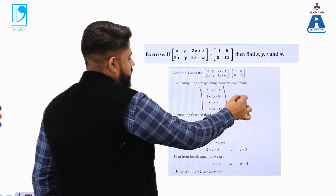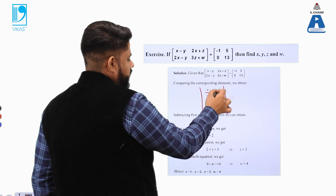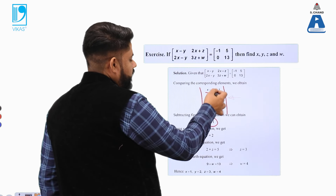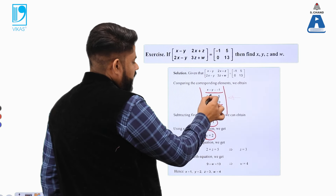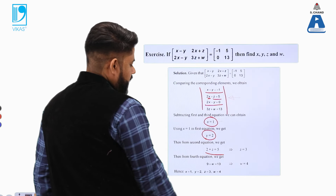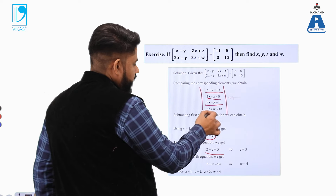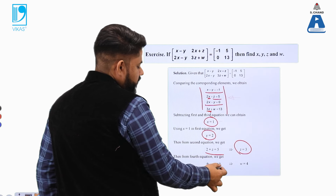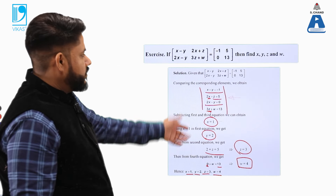Using the general equation-solving procedure: take the first and third equations (x − y = −1 and 2x − y = 0) and subtract to get the value of x. Once x is found, substitute into any equation to get y. Using x = 1 in equation 2x + z = 5: 2×1 + z = 5, so z = 3. Then substitute z = 3 into 3z + w = 13: 9 + w = 13, so w = 4. All variable values are now found.